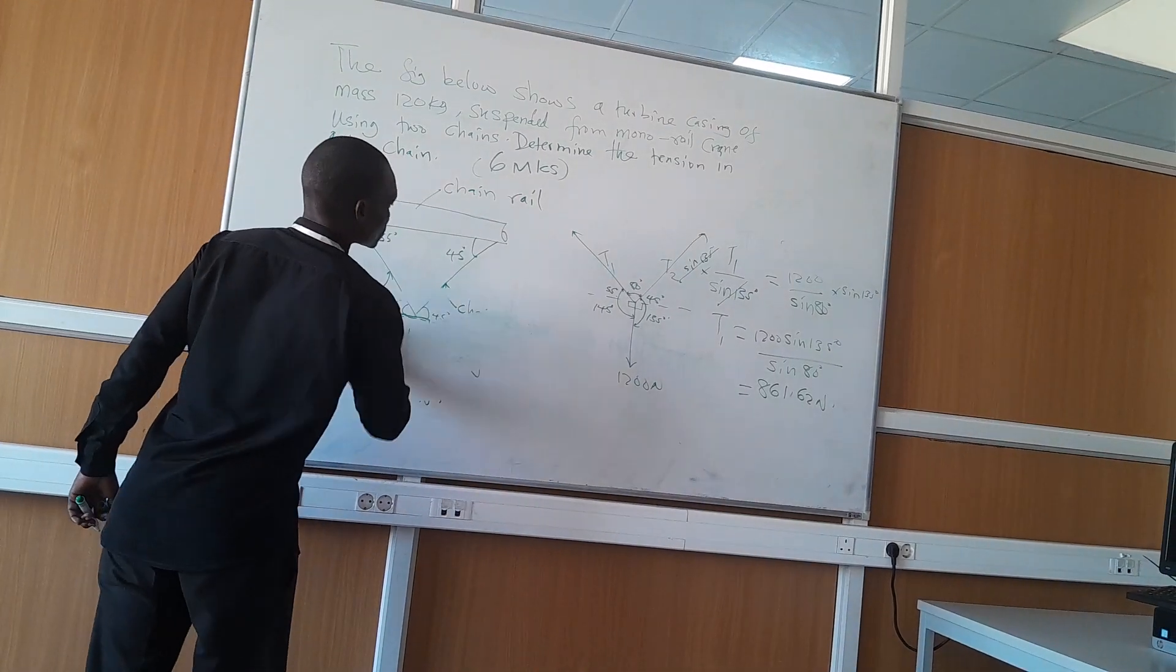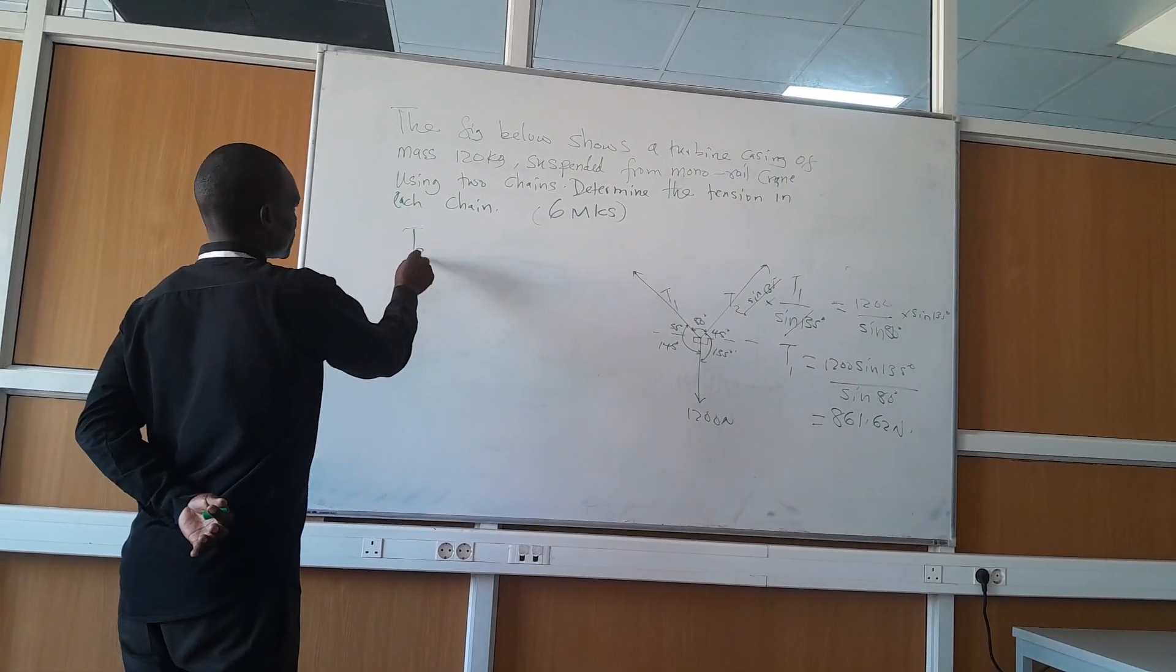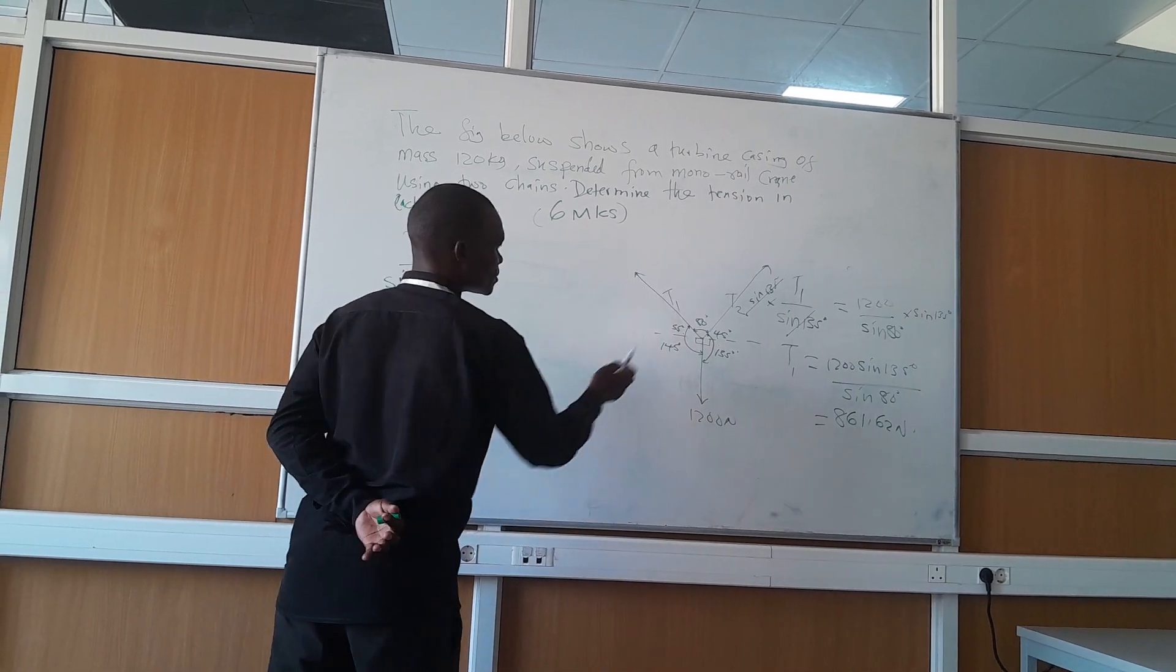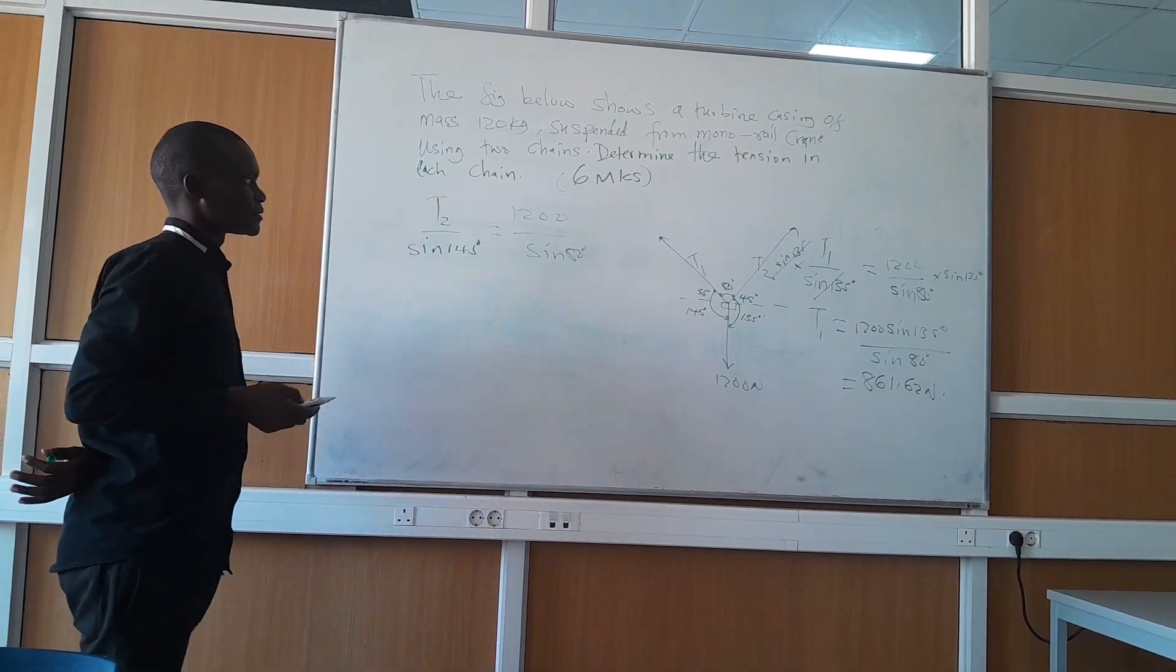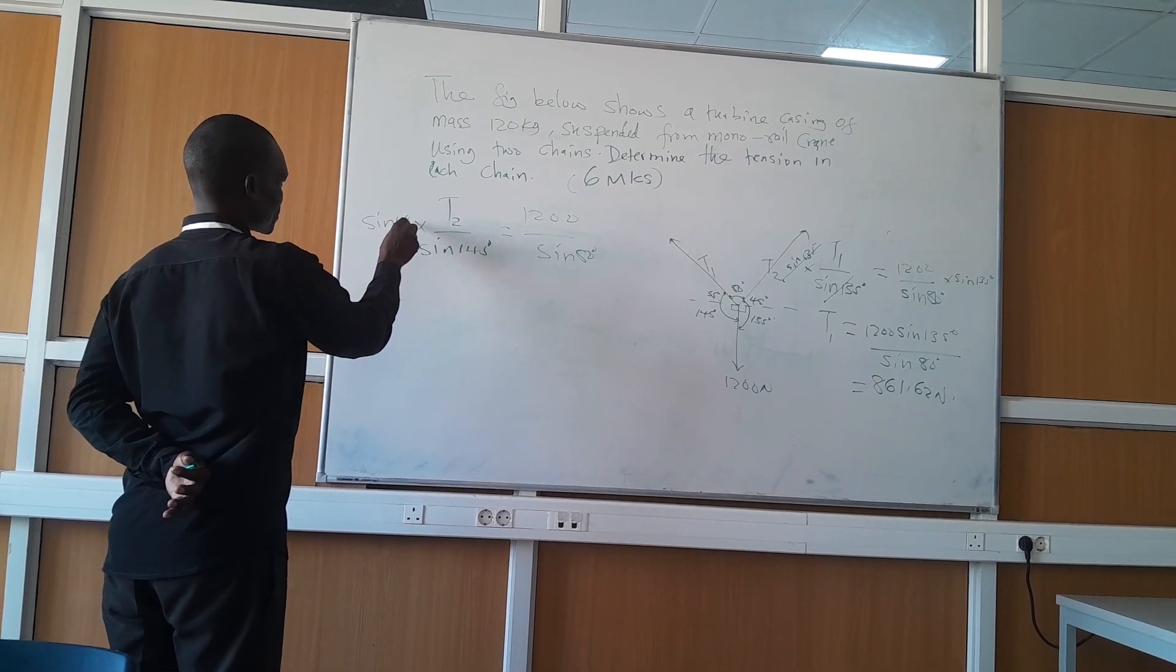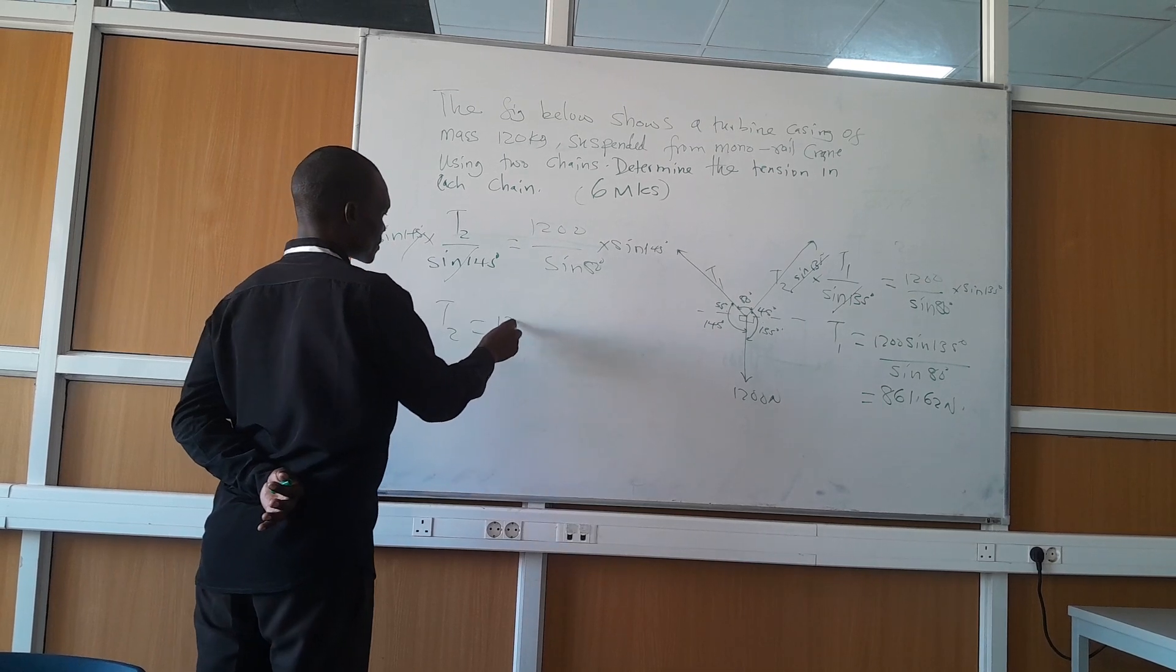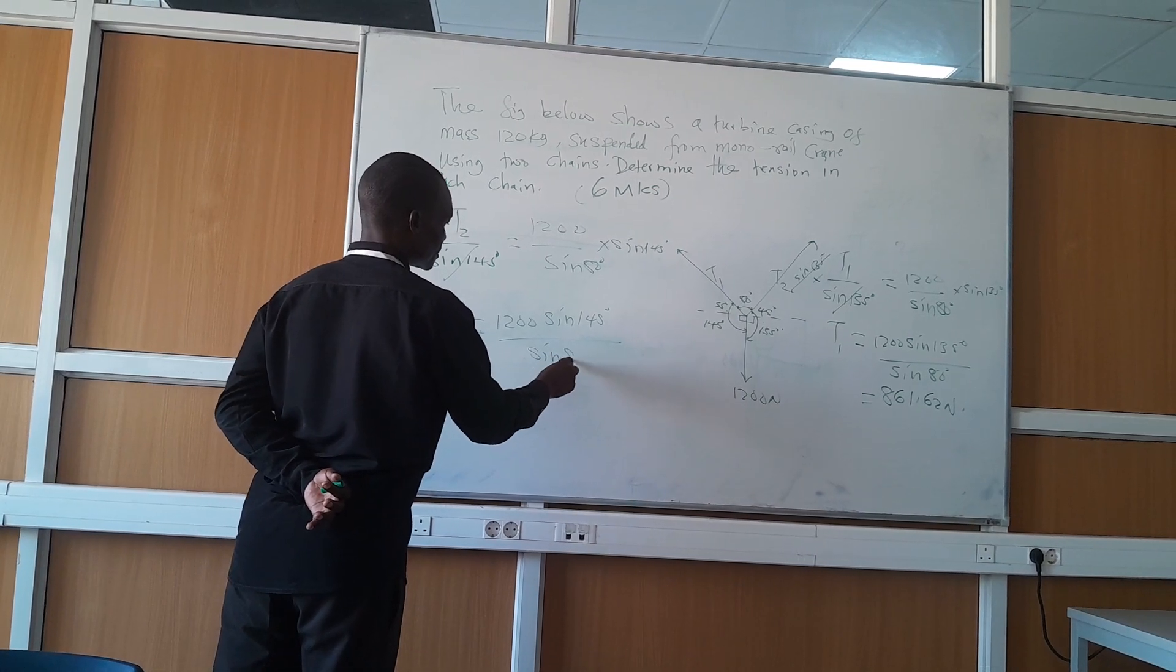Let's go for tension 2. T2 over sine 145 degrees equals 1200 over sine 80. Multiply by sine 145 degrees. T2 is equal to 1200 sine 145 degrees over sine 80.